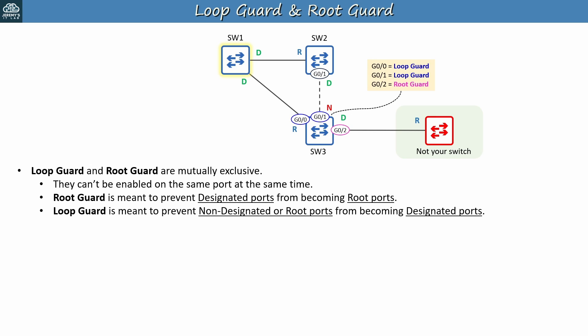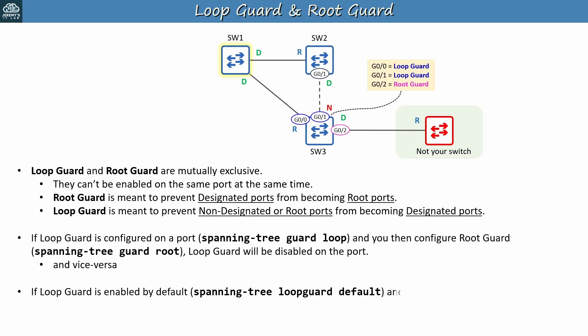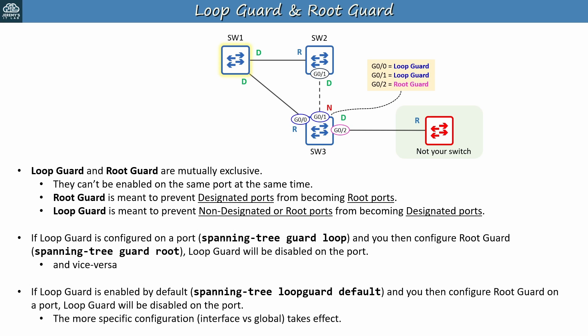Looking at SW3 in the network, G0-0 and G0-1 should use Loop Guard, and G0-2 should use Root Guard. SW3 G0-0 and G0-1 are supposed to receive BPDUs from SW1 and SW2 — if you configure Root Guard on them, they'll both be blocked, cutting off communication in the LAN. If Loop Guard is configured on a port and you then configure Root Guard, Loop Guard will be disabled — the Root Guard command replaces it, and vice versa. If Loop Guard is enabled by default in global config mode and you then configure Root Guard on a port, Loop Guard will be disabled on the port — the more specific interface command takes effect.